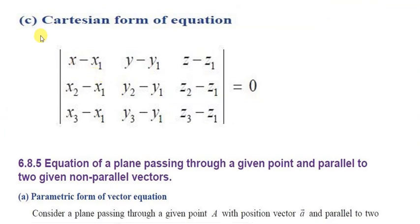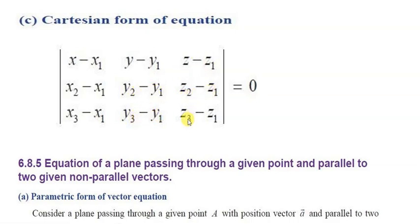The Cartesian form of the equation through three non-collinear points is the determinant: (x minus x1), (x2 minus x1), (x3 minus x1) in the first row; (y minus y1), (y2 minus y1), (y3 minus y1) in the second row; (z minus z1), (z2 minus z1), (z3 minus z1) in the third row, all equal to zero.